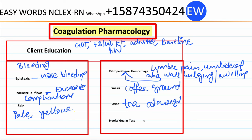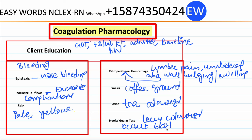Stools — blood in the stools may cause cherry-colored stools, and we should perform the guaiac test to identify occult blood.